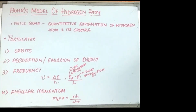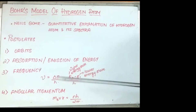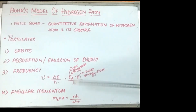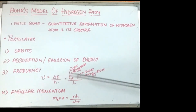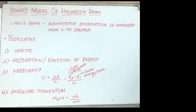The third postulate states that the frequency of radiation absorbed or emitted when a transition occurs between two stationary states is given by: nu is equal to delta E divided by h, which equals (E2 minus E1) divided by h. Here E2 is the higher energy state, E1 is the lower energy state, and delta E is the difference between the energy states. This is also known as Bohr's frequency rule. The angular momentum of an electron in a given stationary state is given by m_e × v × r equal to n × h divided by 2π, where n equals 1, 2, or 3.